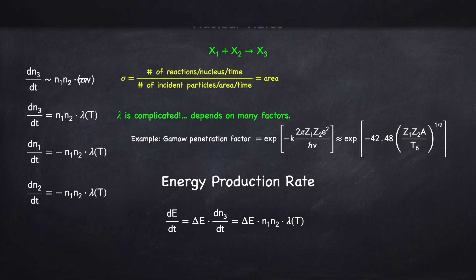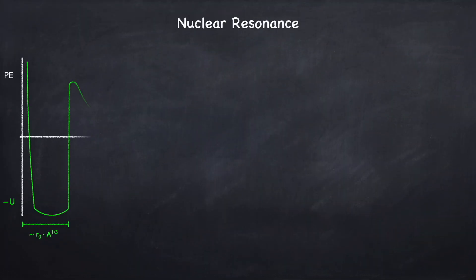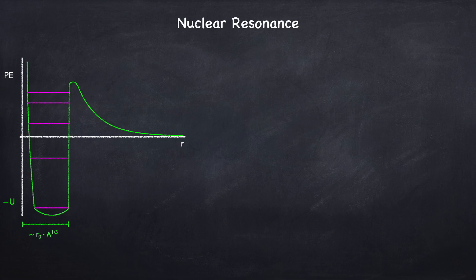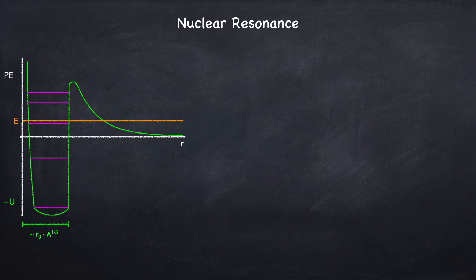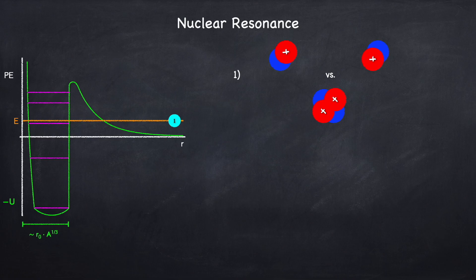Everything just presented covers what are called non-resonant nuclear reaction rates. But there's something very important that takes place under certain circumstances called nuclear resonance. Going back to the energy diagram, inside the potential well, because of quantum mechanics, only certain energies can be occupied. This means inside the well you have a ladder — or a bunch of shelves — and the ball can only have the energies corresponding to these shelves. Now let's say our system has an energy that's very close to one of these energy levels. Let's compare the situations when the particles are far apart versus when they're close together.